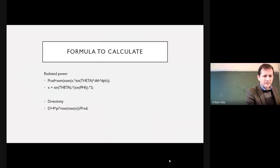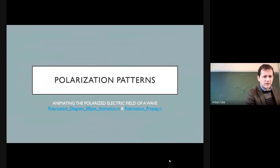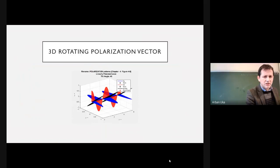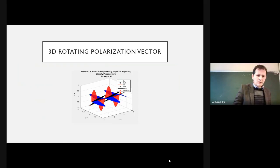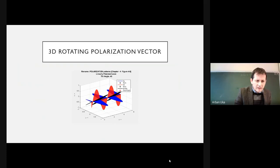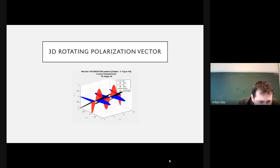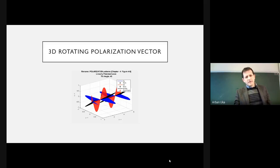We also have the polarization patterns. In the polarization patterns these are the major aspects, and you can also construct GIFs using these functions. Here you can see how the polarization is evolving as a function of Z — the propagation is along the Z-axis — which means the wave is propagating along the direction to the right.